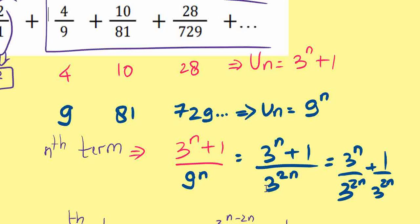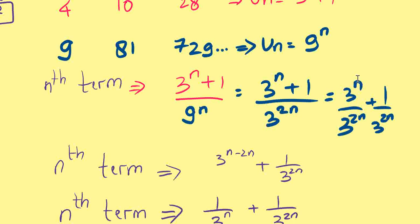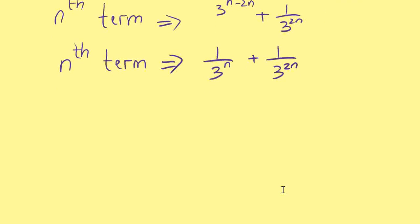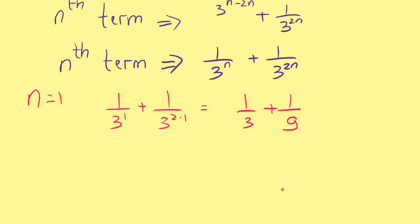So we combine the top and bottom as the n-th term of this whole sequence: (3 to the power of n plus 1) over (9 to the power of n). We simplify by converting 9 to 3 squared, then separate the denominator. The result simplifies to 1 over 3^n plus 1 over 3^(2n). Let's verify for n equals 1: 1 over 3 plus 1 over 9 equals 3 over 9 plus 1 over 9, giving us 4 over 9 — which is correct.